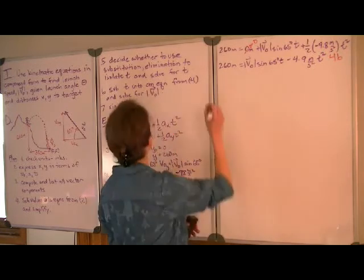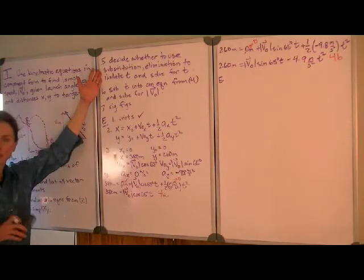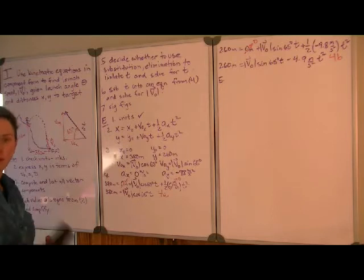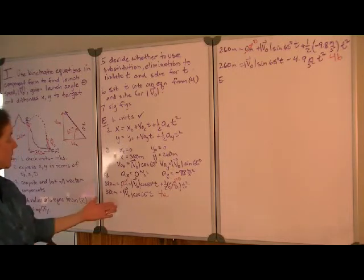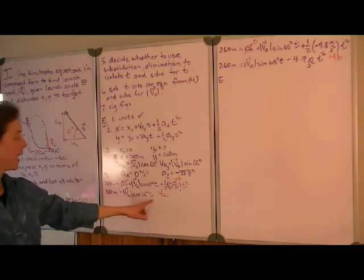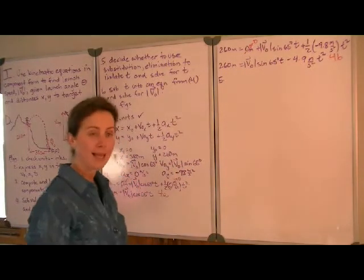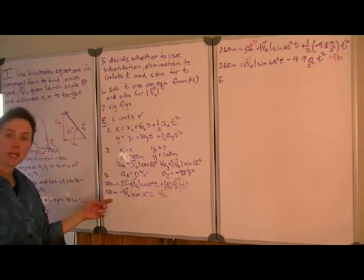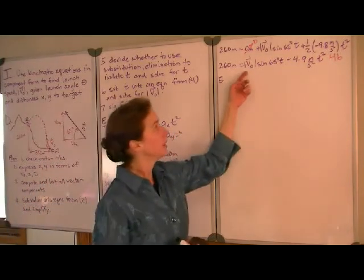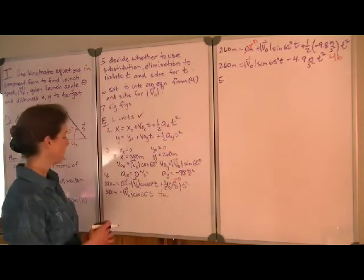Now we are at a decision point. We may end up with multiple equations and multiple unknowns, and we need to decide how to resolve that to get down to one variable we can solve for first. Our choices include elimination — subtracting a multiple of one equation from the other. In this case, since v-naught and t are both unknowns and they appear in the same term, that approach is not going to be very fruitful. Since equation 4a is rather simple, I would like to solve for v-naught using that expression and substitute into 4b so that v-naught is eliminated, giving one equation with t as the only unknown.